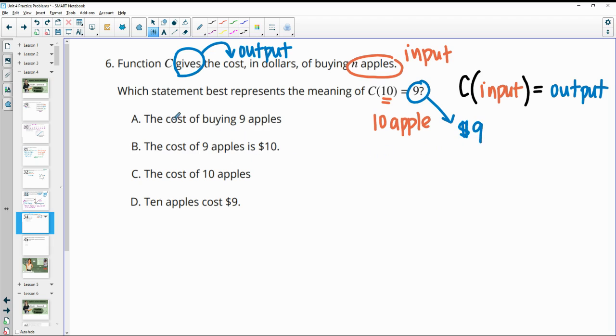So in A, it says that it's the cost of buying 9 apples. Well, that's wrong. The cost of 9 apples. Again, no, we have 10 apples. And then C just says, it says the cost of 10 apples. No, that would have been like this. It would have just stayed here without an equal sign. D gives us 10 apples is $9. That's what this one actually says since it gives us that output.